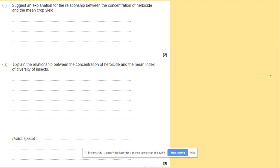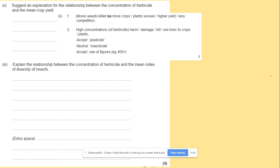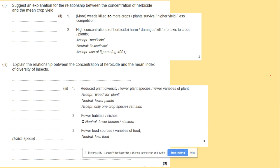Suggest an explanation for the relationship between concentration of herbicides and the mean crop. You can come back to the graph and have a look at it. But the relationship is the fact that more weeds are killed, so more crop plants will survive. So the high concentration damages the crops - they are toxic to crops.